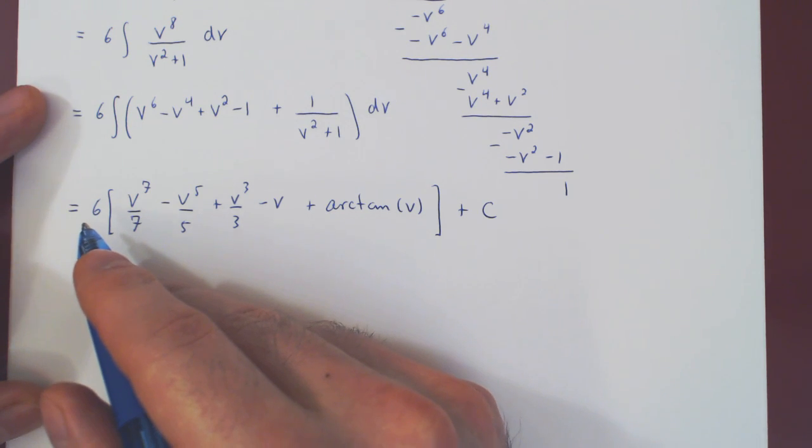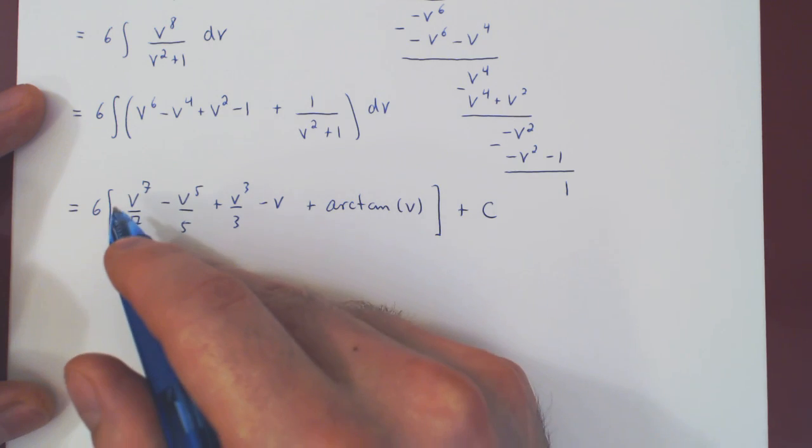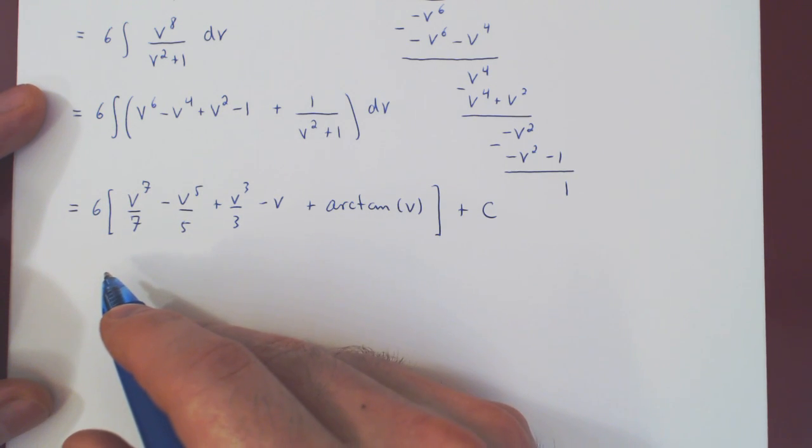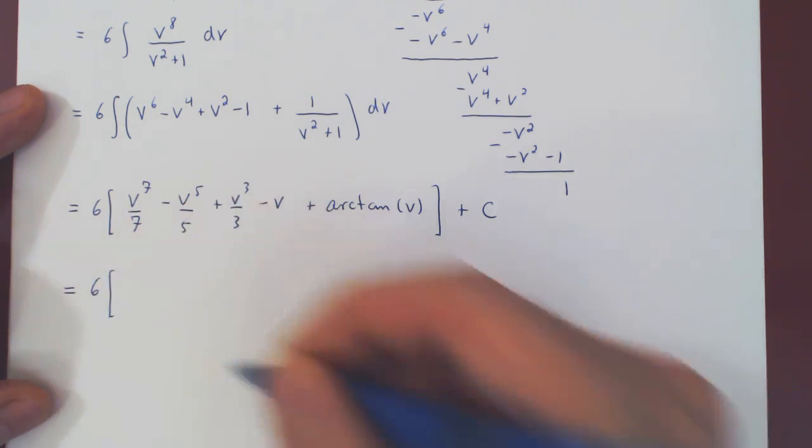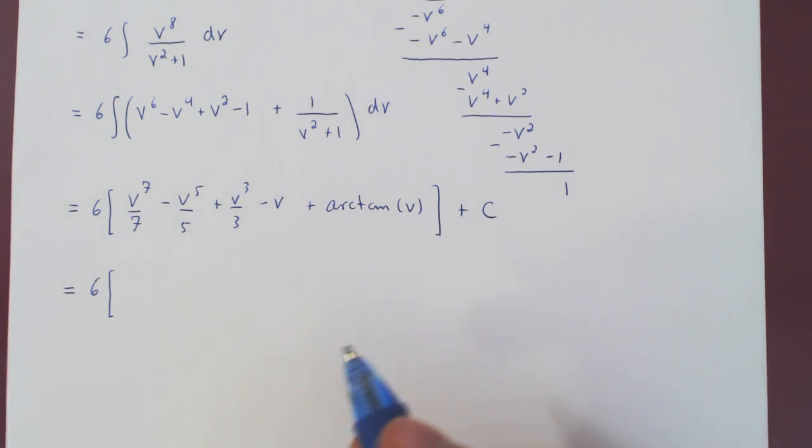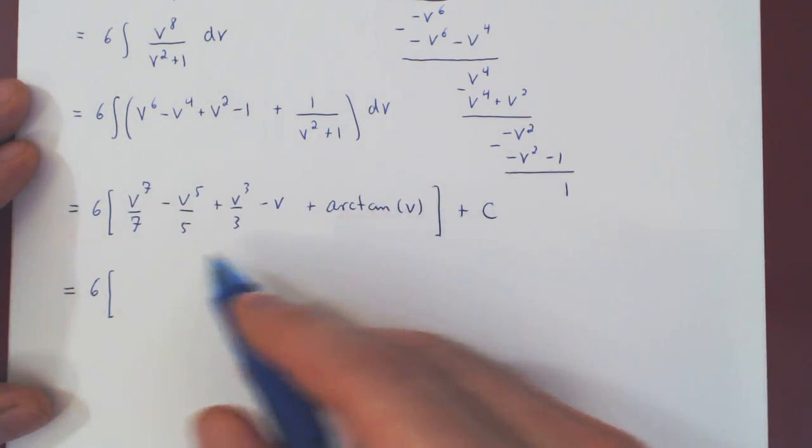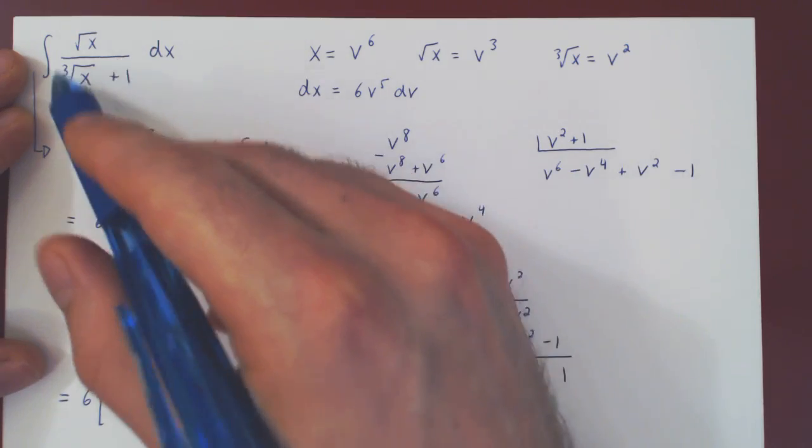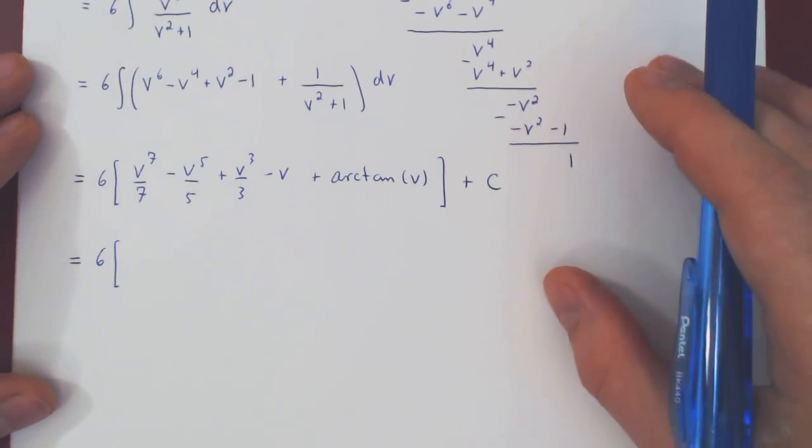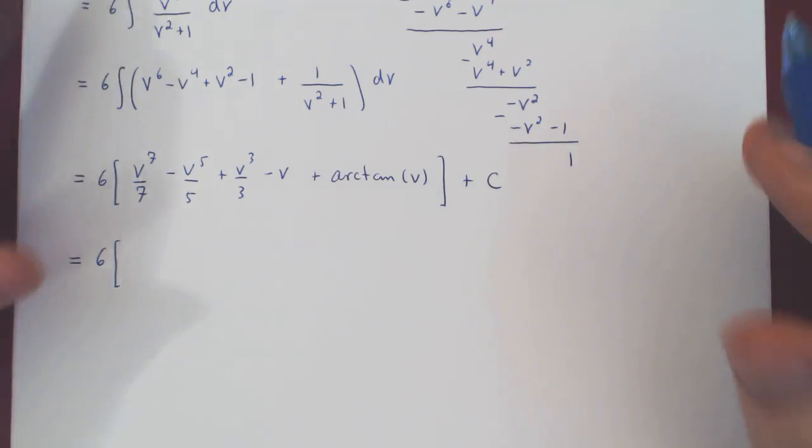So we can if we want multiply by 6 or we can leave it up front as a scalar multiple. Let me leave it up front. So 6 times, the only step now is to go back in terms of x. The original integral was with respect to x. Well, we have to therefore replace v in terms of x.